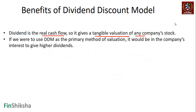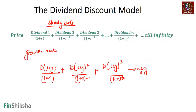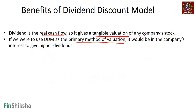If DDM is used as a primary method of valuation, it is in the company's interest to pay higher dividends because higher dividends lead to a higher share price. So if a company is being valued on DDM, it is incentivized to increase dividends — which is also good for shareholders.